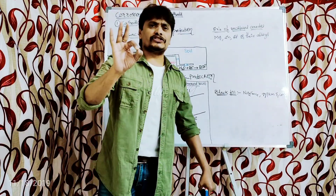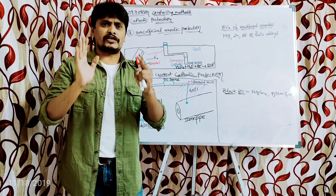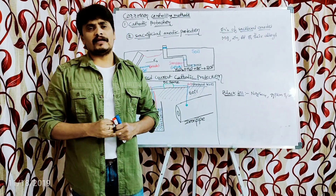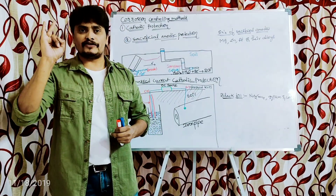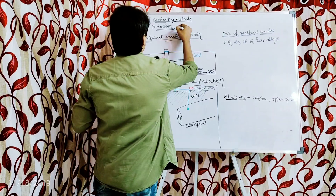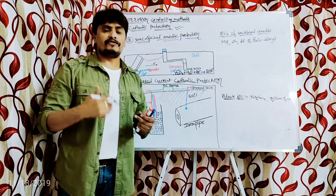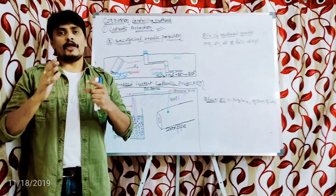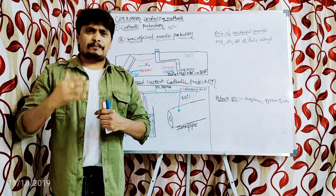Among all the corrosion controlling methods, the most widely used are: first, cathodic protection, and second, surface coatings. We are going to discuss cathodic protection — that is, how we use cathodic protection to control the corrosion of the metal. The principle involved in cathodic protection will now be explained.